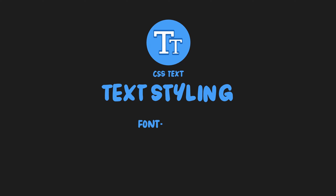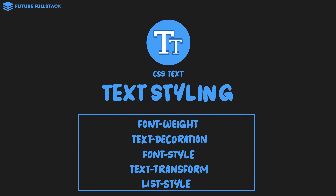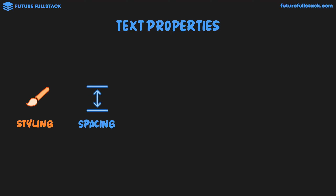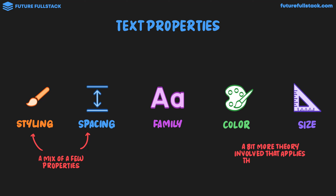Let's begin by exploring how to transform the appearance of text through various techniques of text styling. We'll be discussing font weight, text decoration, font style, text transform, and list style. Throughout this topic, we're going to look at a range of text properties broken down into five categories: styling, spacing, family, color, and size. Color and size have a bit more theory involved that applies throughout CSS, so in this chapter we're focusing on text styling.